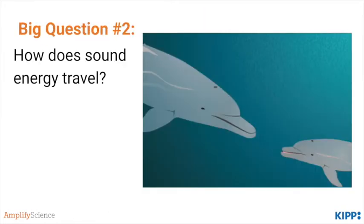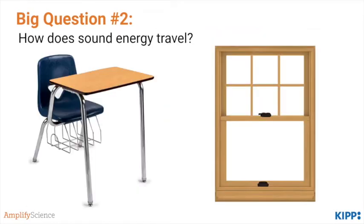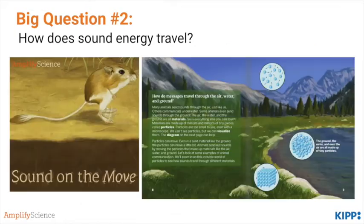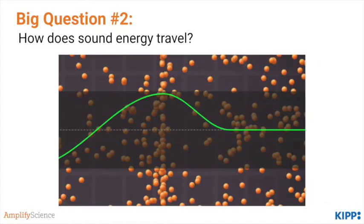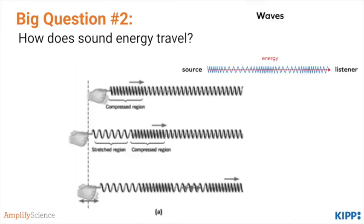On to big question number two: how does sound energy travel? We know animals communicate using sound and that sound travels as waves from the source to the listener, but now we'll get into more detail about how exactly sound travels through water or air. Students begin by making sounds on different objects and noticing how they sound different. They then read part of Sound on the Move, learning that sound can travel through air, water, or solids, each with slightly different properties. Students experiment further in the Sound Wave Simulator, looking more closely at the collision between particles, and examine the slinky model to notice how the rings collide and transfer energy to move the wave along.